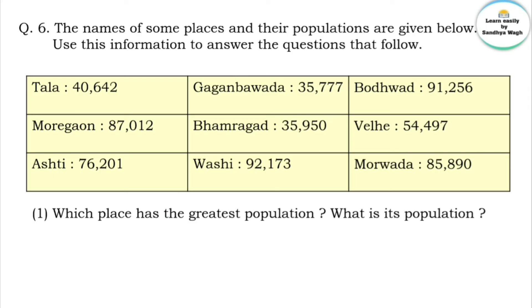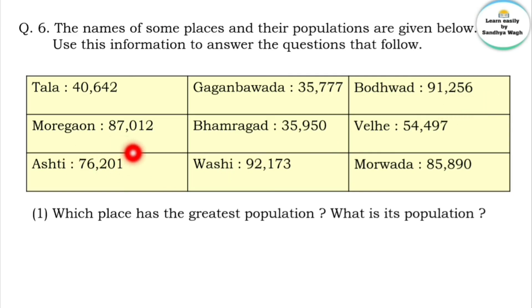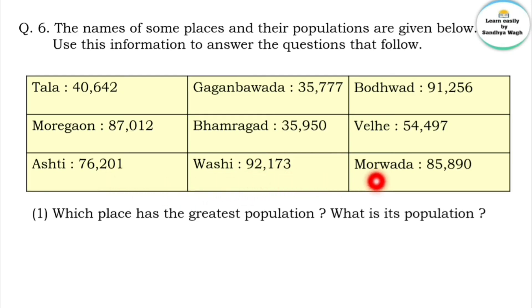Observing the table, the populations are: 40,642; 35,777; 91,256; 87,012; 35,950; 54,497; 76,201; 92,173; and 85,890. Comparing all values, the greatest population is 92,173.